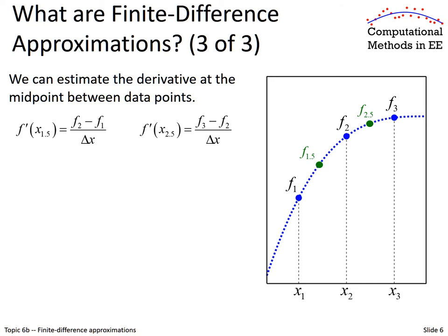Now, what if we wanted to know the derivative at an intermediate point — let's say at point 1.5, somewhere in between F1 and F2? Writing F1.5 does not imply we are actually storing a value at point 1.5; it means we want to know the slope at that intermediate point using information from F1, F2, and F3. We connect F1 with F2 with a straight line and say the slope at F1.5 is the slope of that line: rise over run, F2 minus F1 over 1 delta X. Similarly, the derivative at point 2.5 is approximated by the slope connecting F2 to F3.